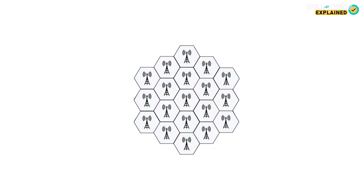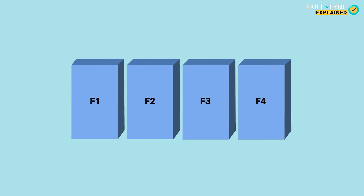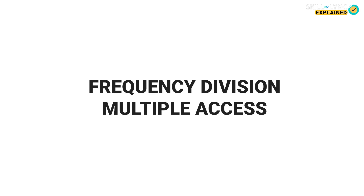But how did this work? A wide band of frequency was available for communication, which was split into smaller frequency zones. These smaller frequency zones were then assigned to several users for communication at the same time. This was called Frequency Division Multiple Access, or FDMA.